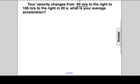We start off with some speed. I'm going to call that V naught, the initial speed of 60 meters per second to the right. So that's positive, because it's to the right. And we end up with some speed later on, a VF of, again, positive 100 meters per second to the right. And we have an elapsed time of 20 seconds.